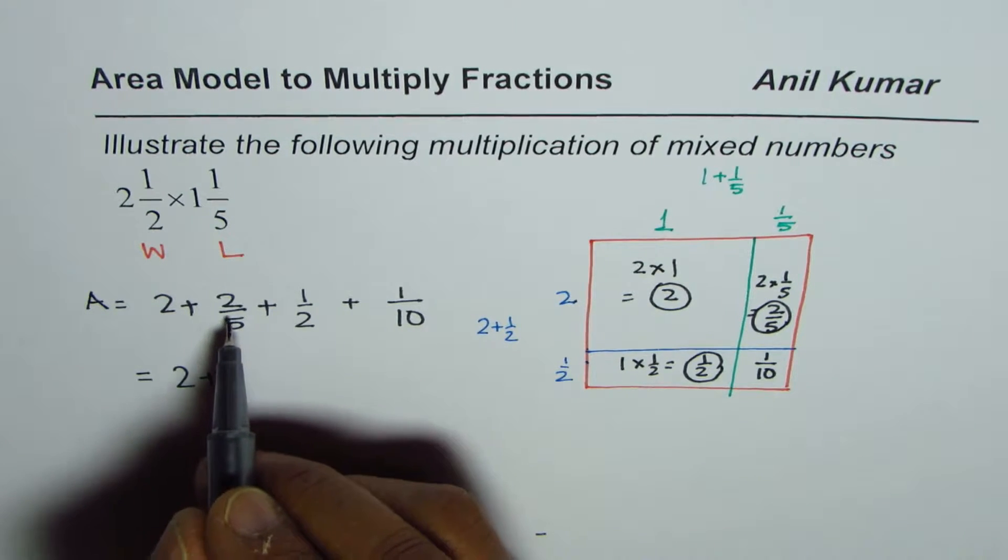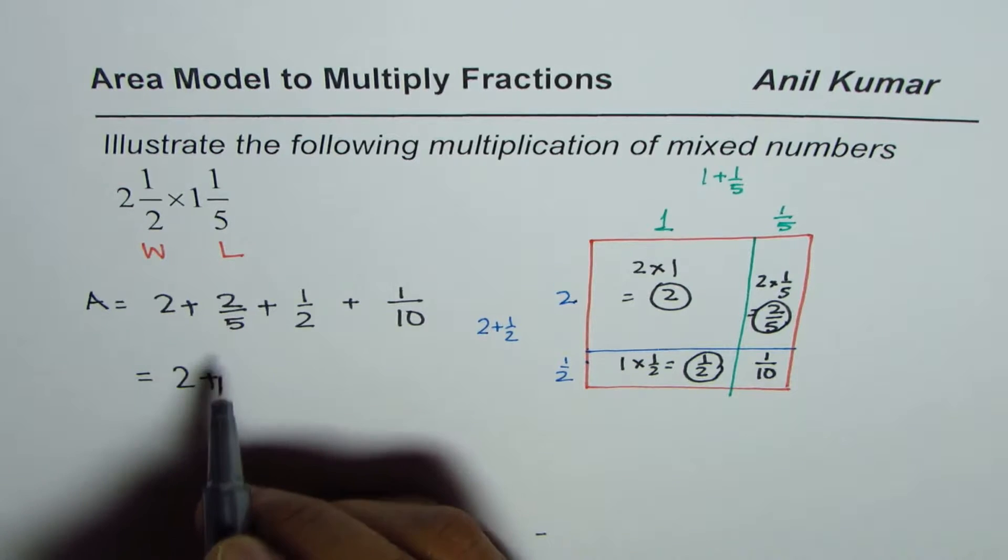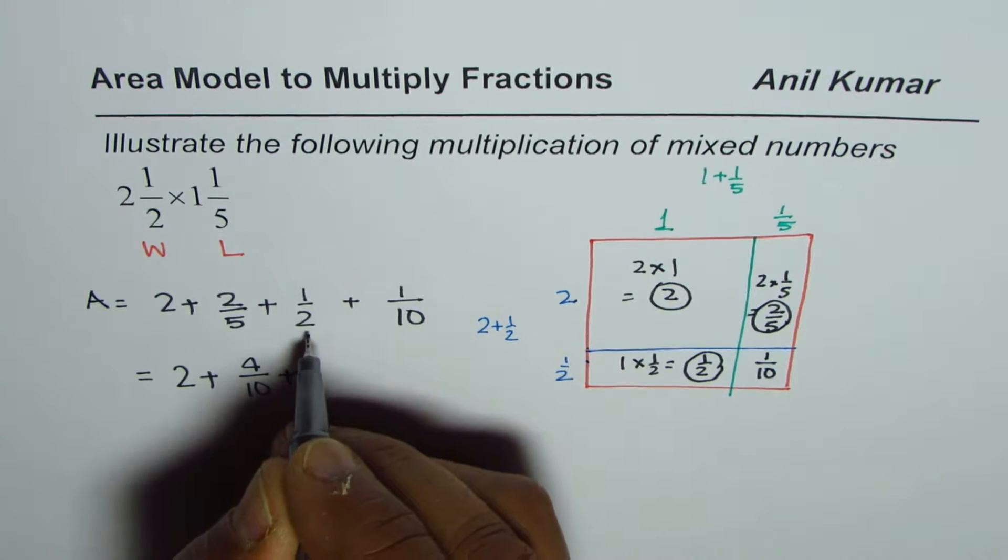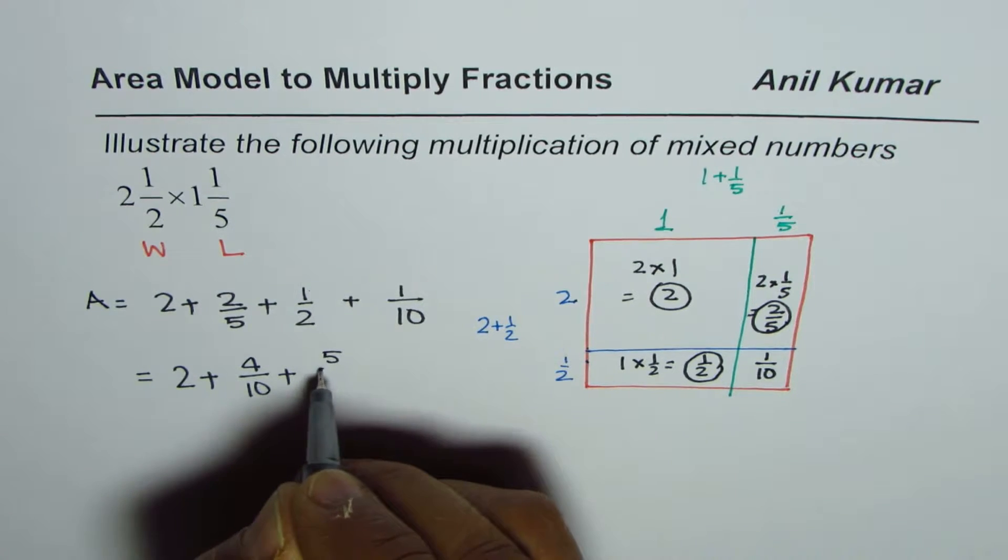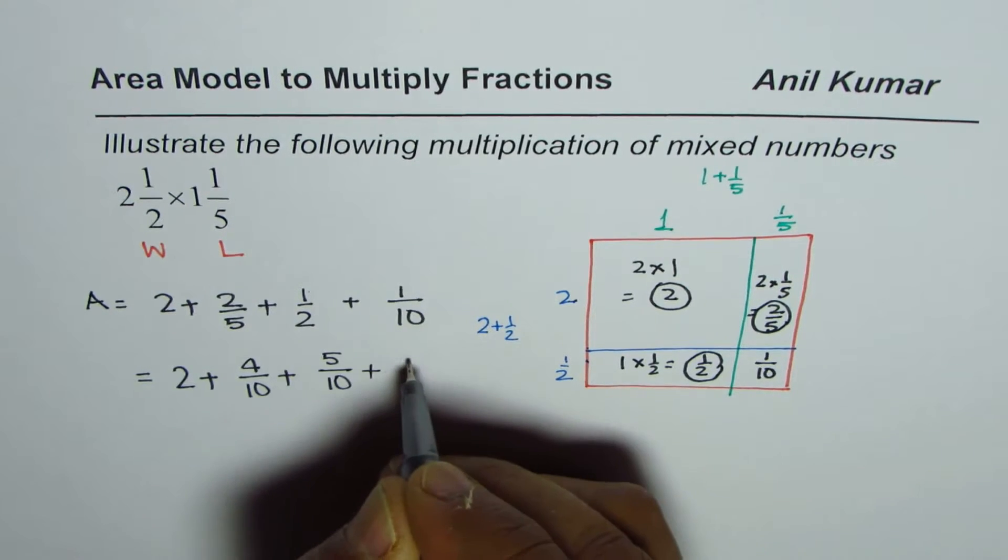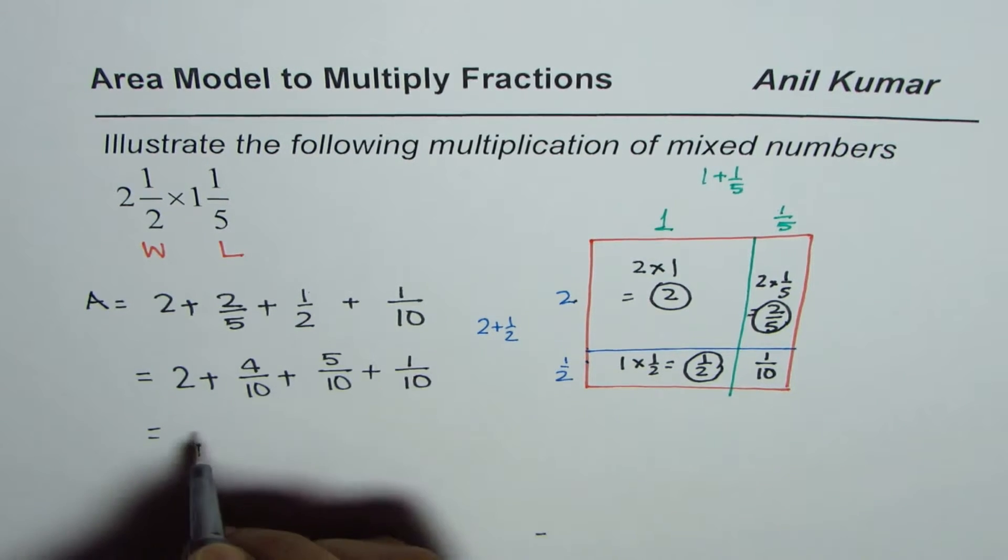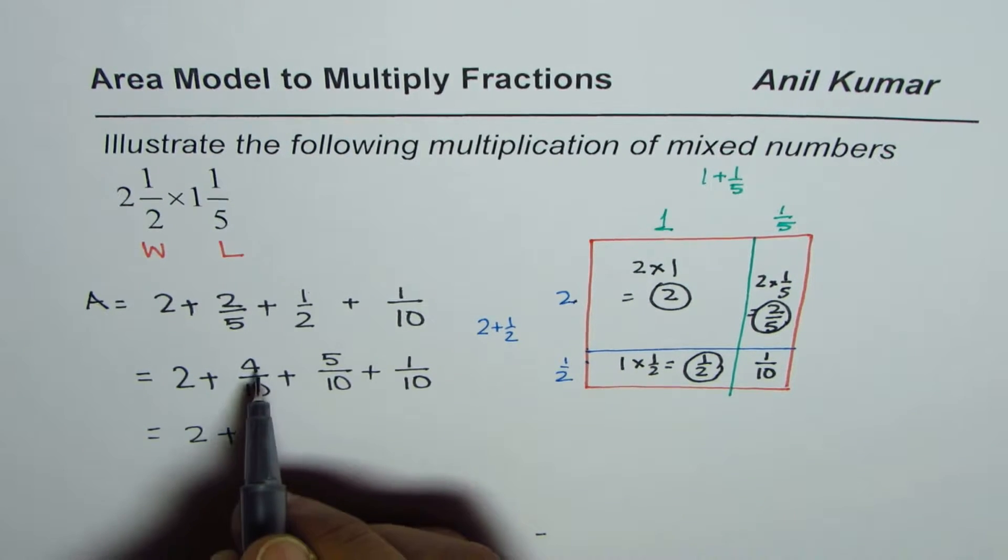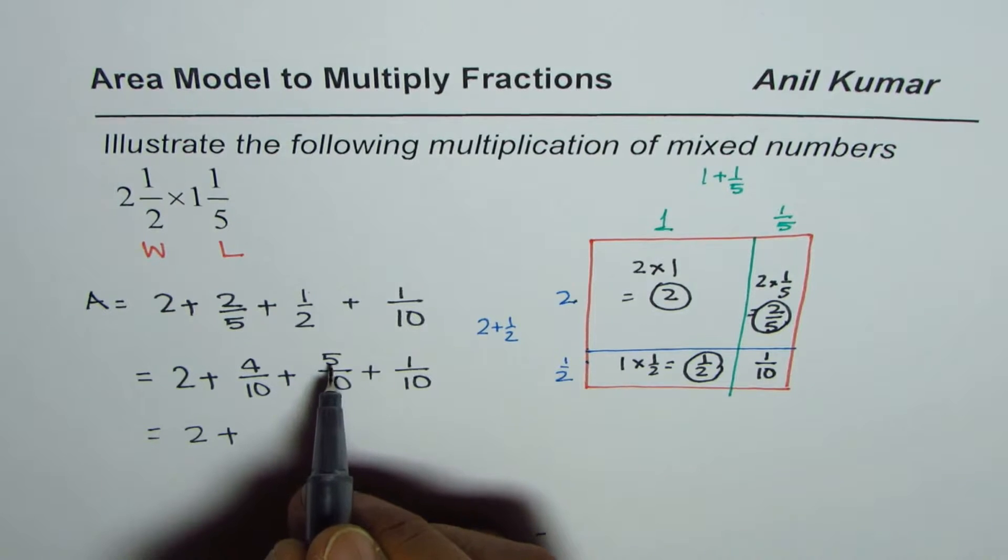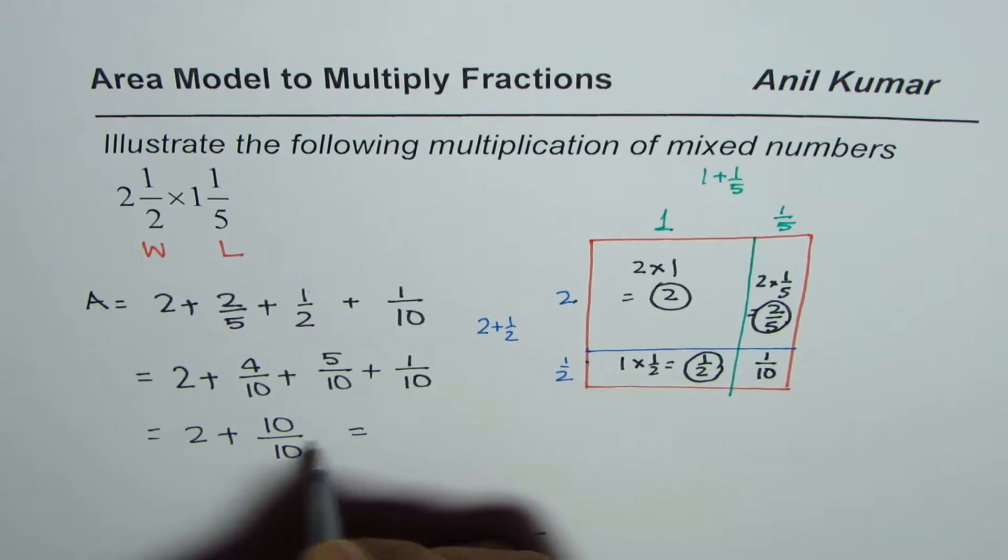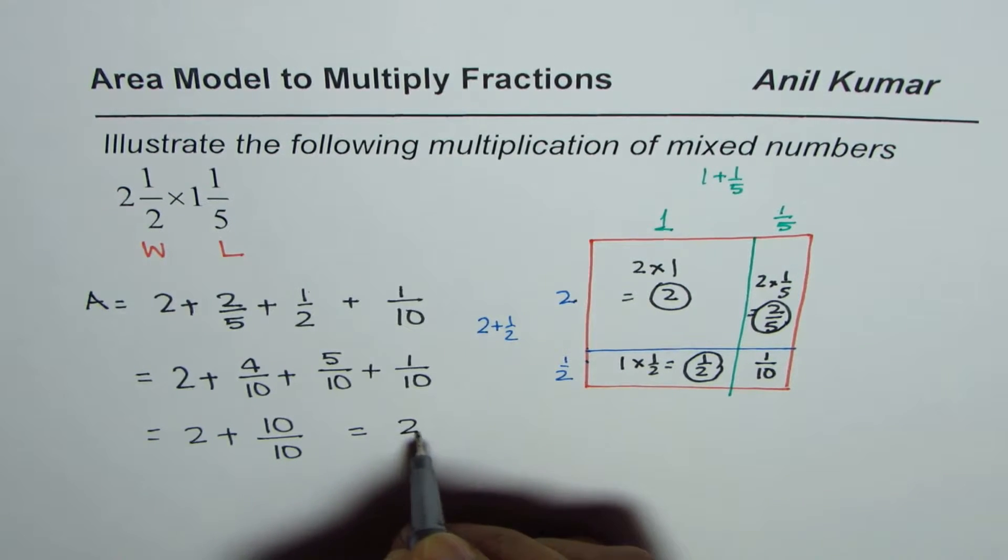These fractions have different denominators. To add them we need a common denominator. 10 is the lowest common denominator. 2 over 5 becomes 4/10, half becomes 5/10, plus 1/10. Now we can add them: 2 plus 4 plus 5 is 9, 9 plus 1 is 10, so we get 10/10.